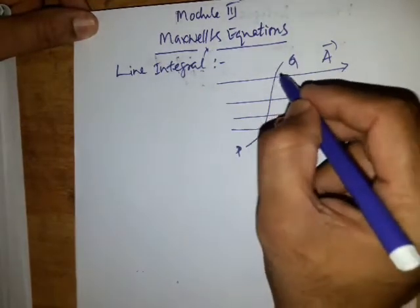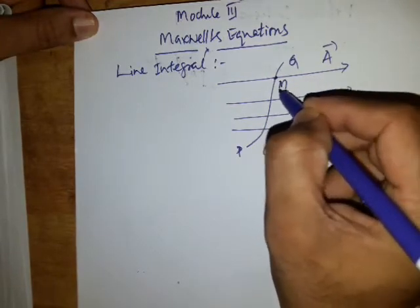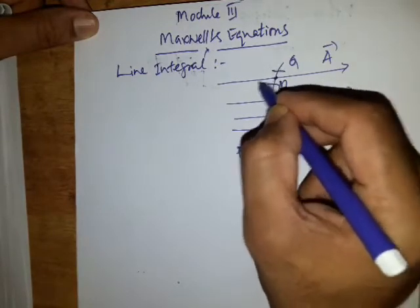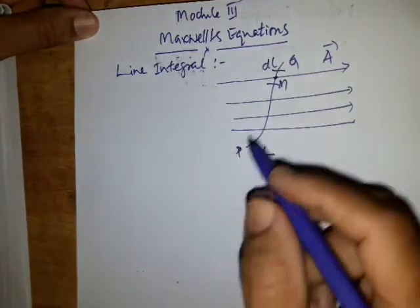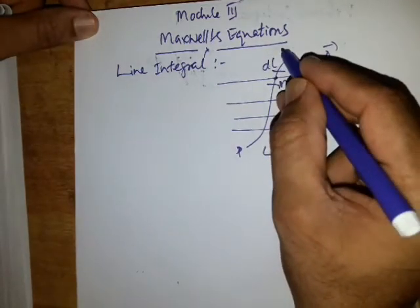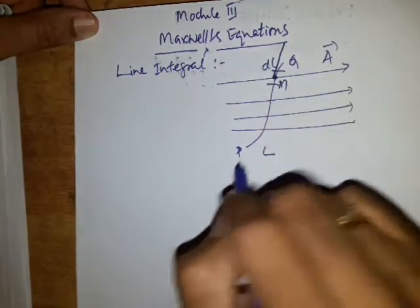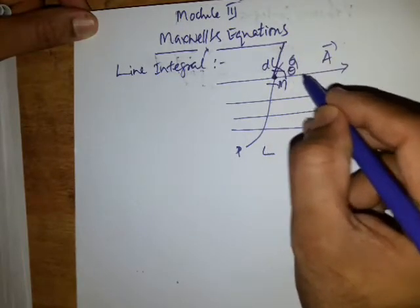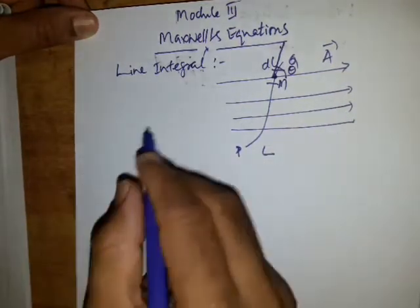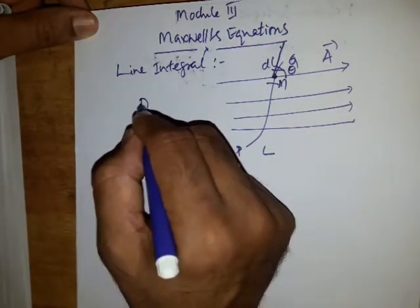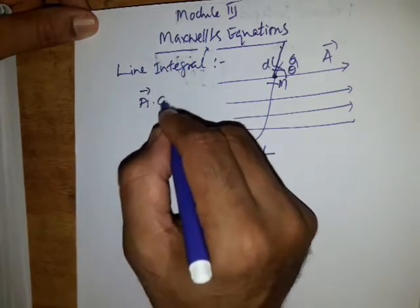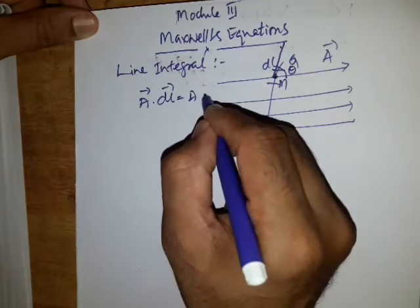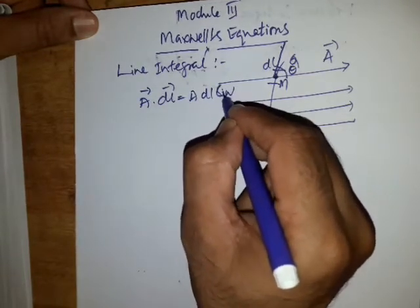So let us consider one such point, say M, around which a small elemental length DL. And draw a tangent to that point M and let theta be the angle between the tangent and the vector field A. Then we can write the vector dot product of vector A DL is equal to A DL cos theta.